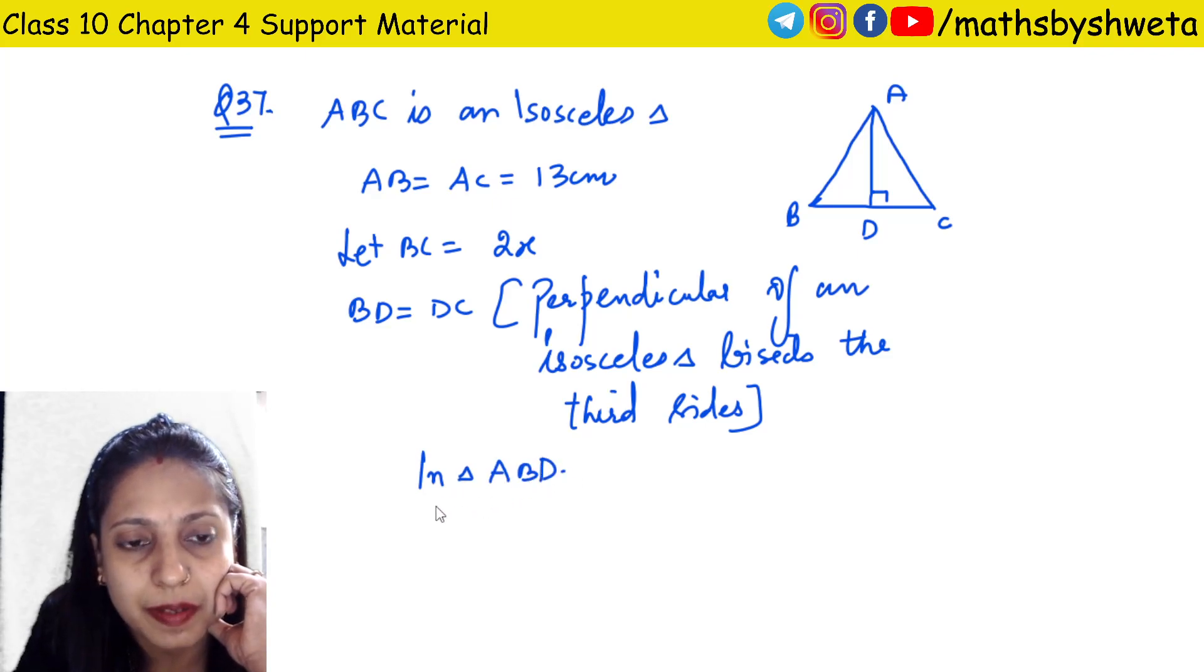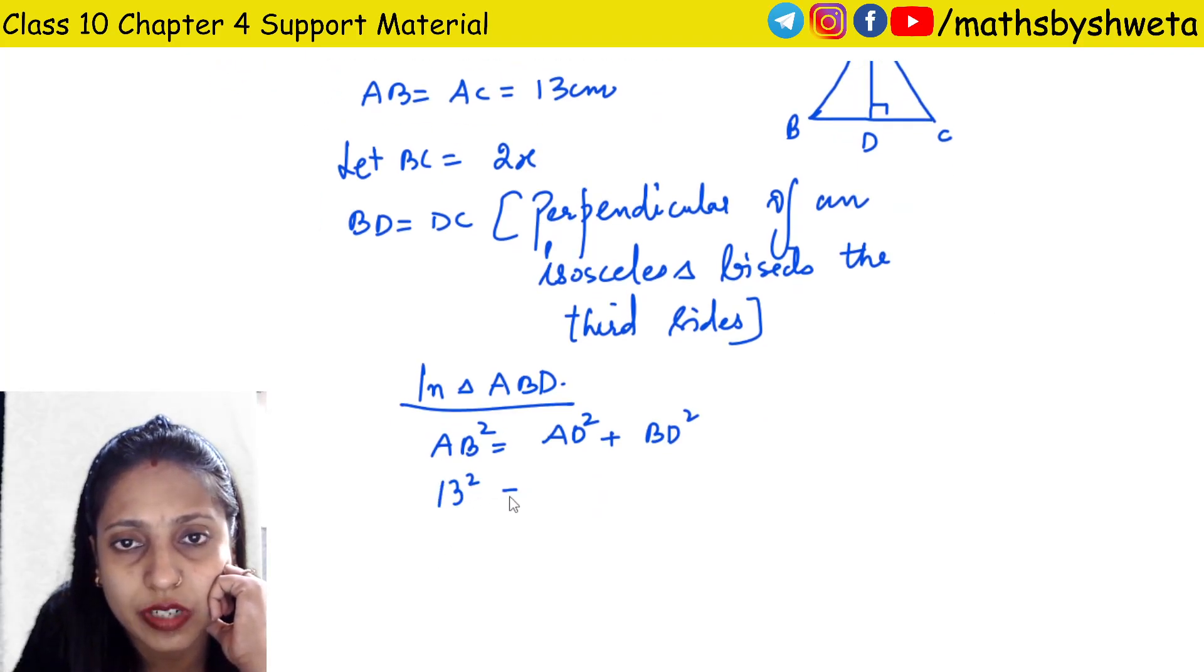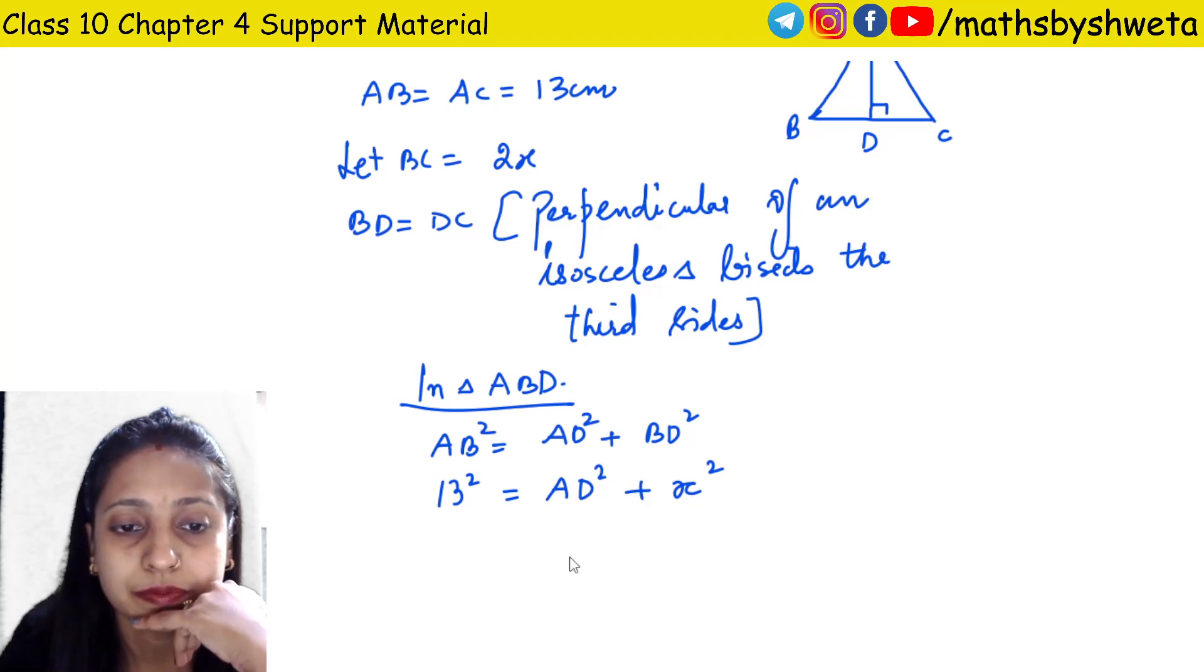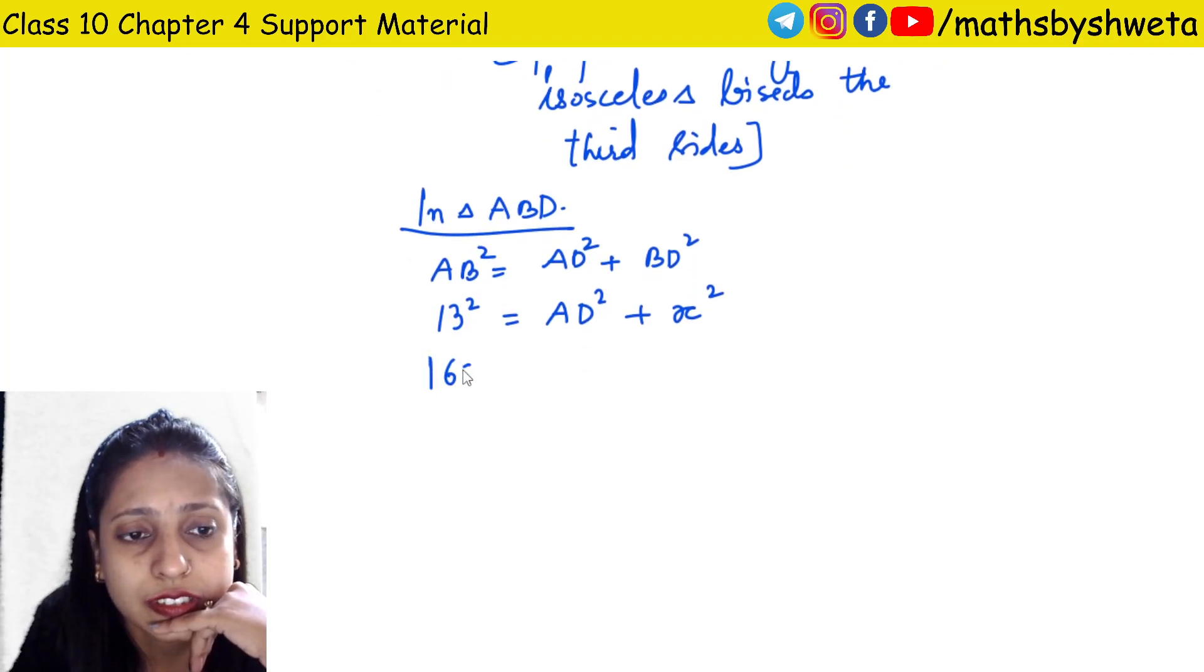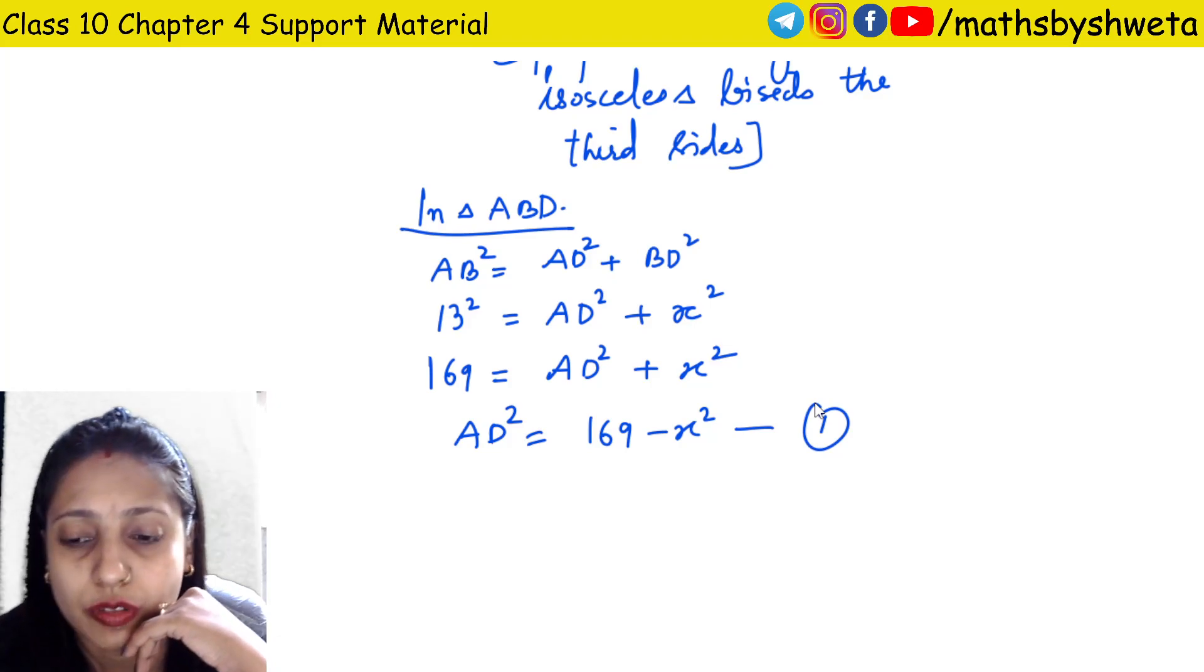AB is 13, so I have 13 square equals AD square plus x square. 13 square is 169, equals AD square plus x square. AD square comes to 169 minus x square. This is equation 1, we will use it later.